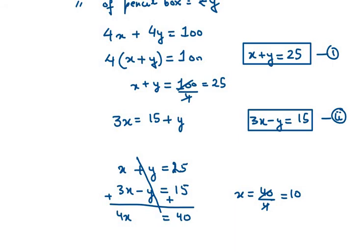Now we can find the value of y using equation number one. From x equals 10, we can find the value of y using equation number one. So x is 10, y is unknown, so y will be 25 minus 10, which equals 15.